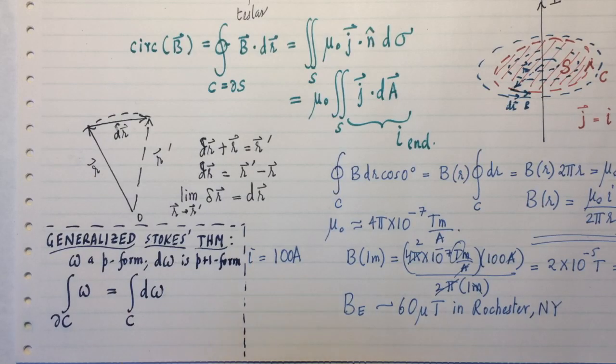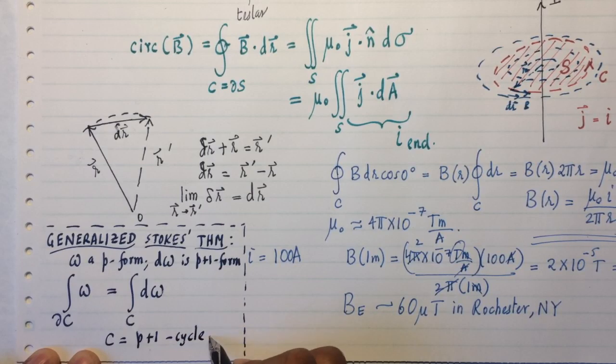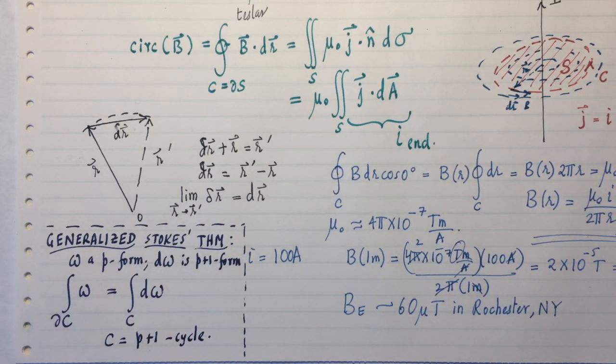From this theorem, every other theorem you learn in your life, like Gauss' law or the regular Stokes' law, Ampere's law, Faraday's law, just about anything else. Green's theorem in the plane can be derived as a special consequence of this. So, c is a p-plus-one cycle. I'll just leave it at that and whet your appetite. I think it's best for me not to explain too much so that people who are interested in this type of higher mathematics can go investigate it on their own.